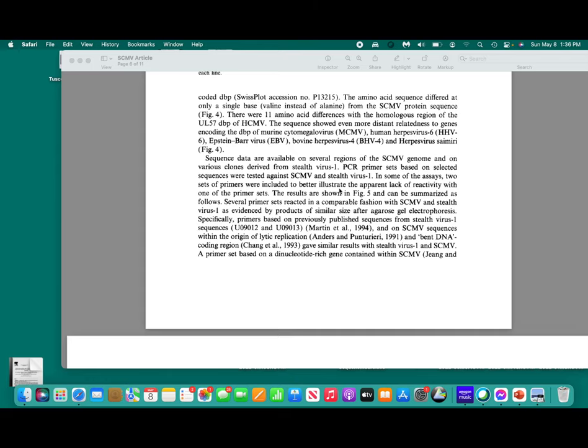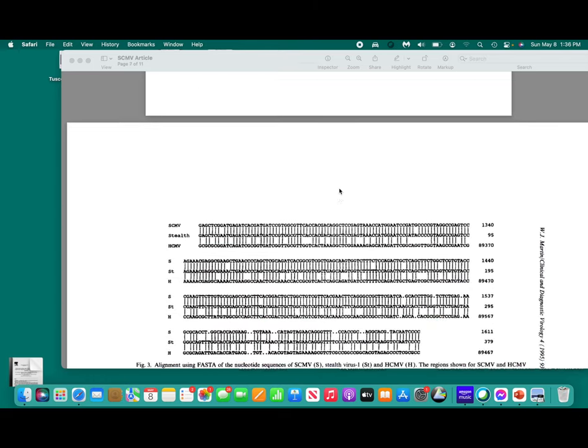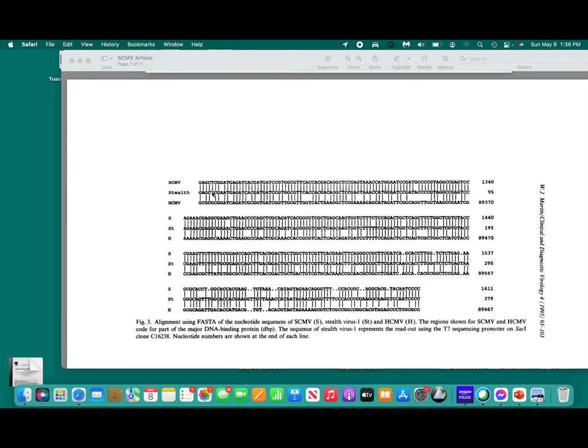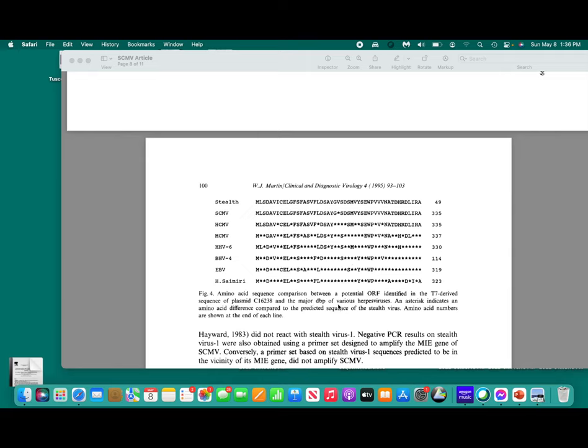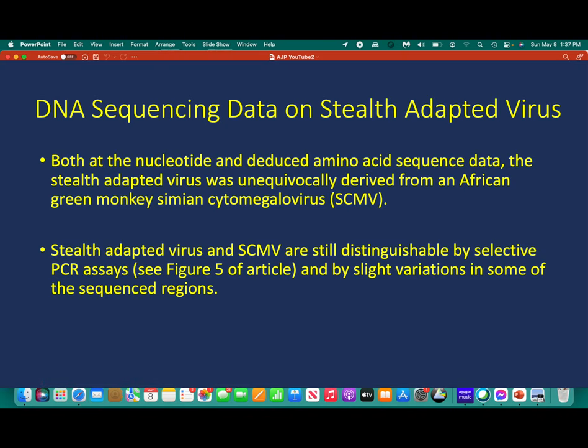We could extend that analysis, finding additional clones to make an unequivocal statement. This is again, another piece of sequence data from the stealth virus matching to African green monkey simian cytomegalovirus, far better than the human cytomegalovirus. Also, we could, or the computer can translate the sequence into amino acids, and a stretch of nucleotides would give rise to this amino acid sequence, which matched except for one amino acid to African green monkey simian cytomegalovirus, far better than the same proteins or amino acid sequence in human cytomegalovirus.